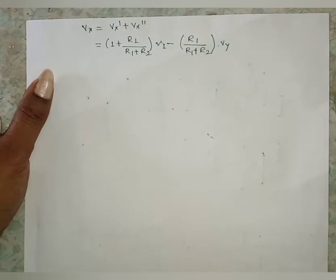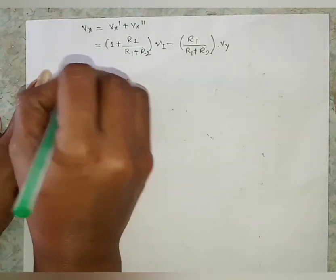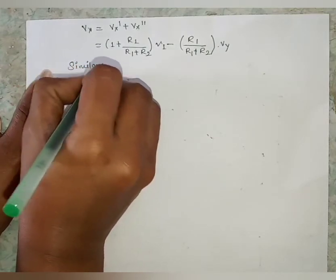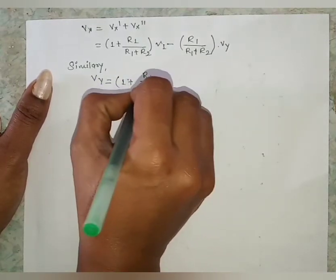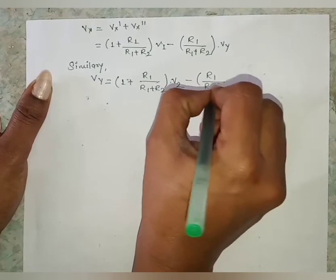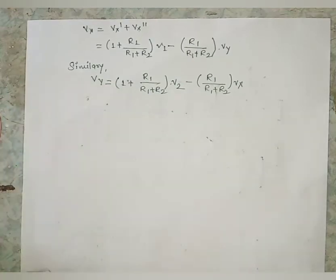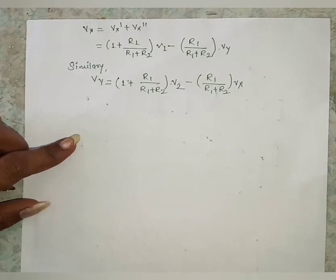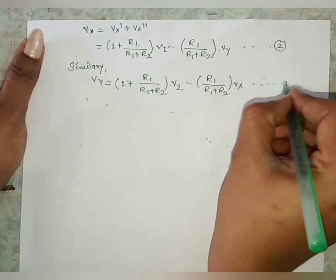So Vx = Vx' + Vx'' = (1 + R1/(R1+R2)) × V1 − R1/(R1+R2) × V1. Similarly, for Vy: Vy = (1 + R1/(R1+R2)) × V2 − R1/(R1+R2) × Vx. These are equations 2 and 3; now we have both Vx and Vy.